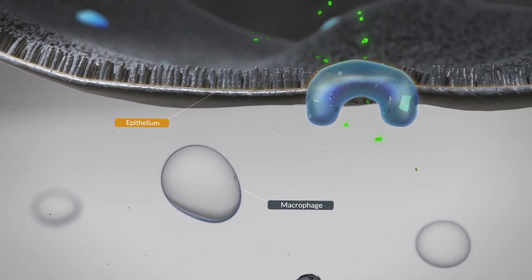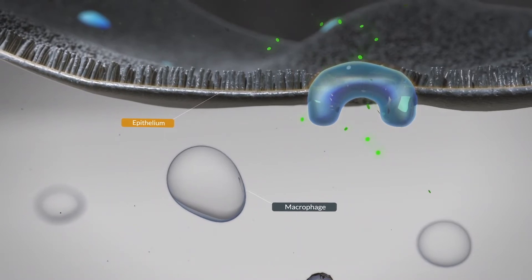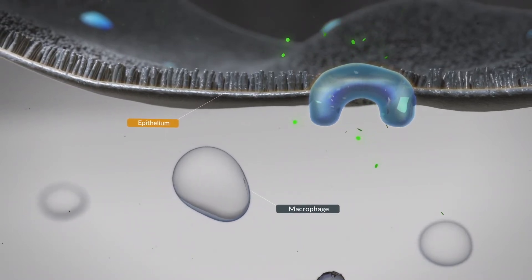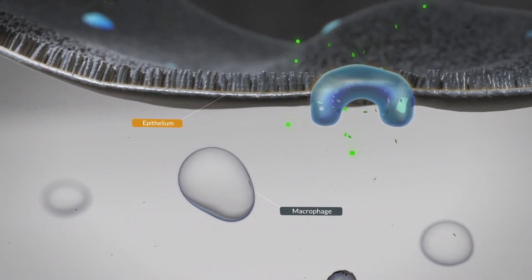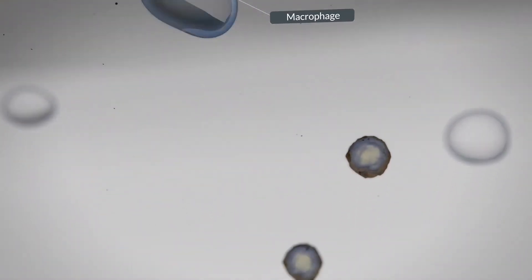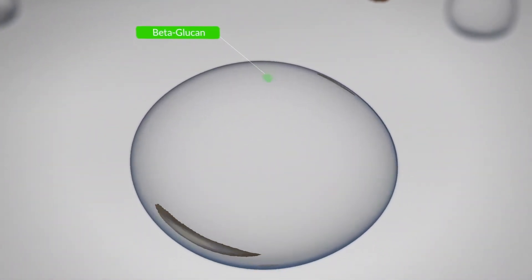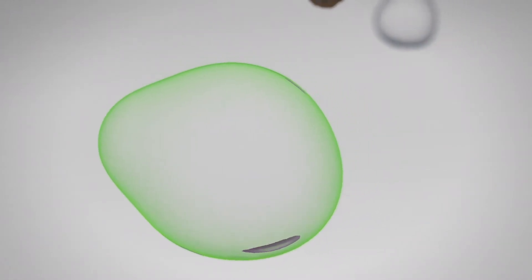The macrophages are a type of white blood cell whose job is to detect intruders and coordinate the body's defense against them. Research has shown that macrophages fortified by beta-glucan are better able to rally the body's defenses.